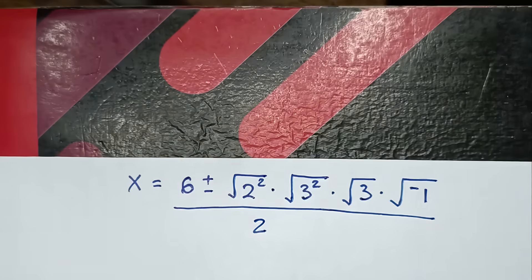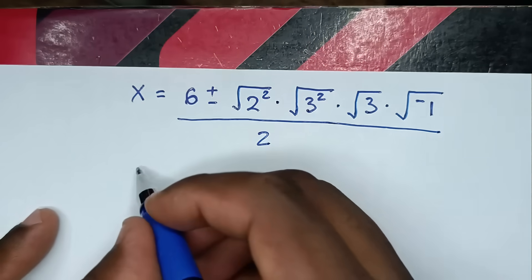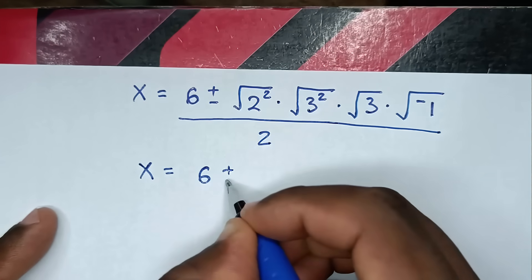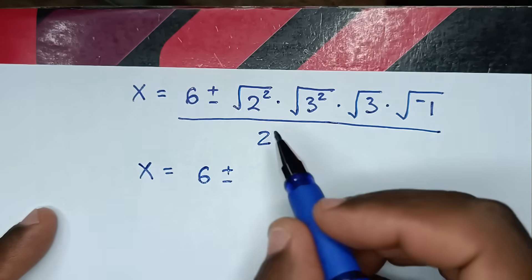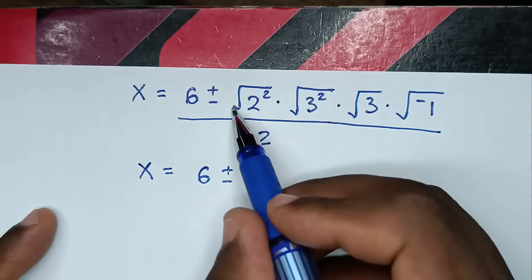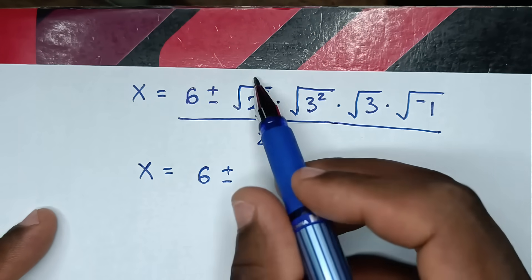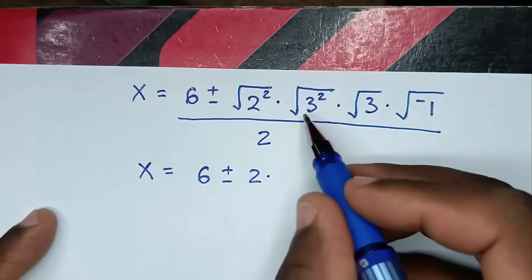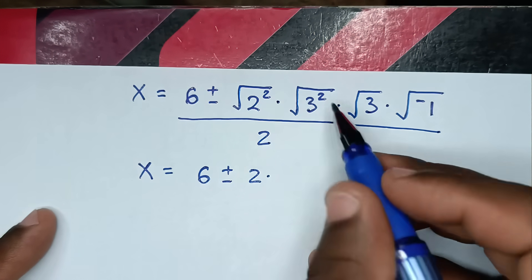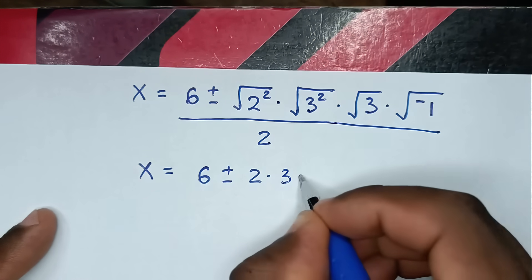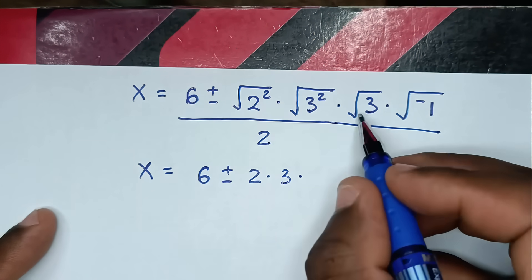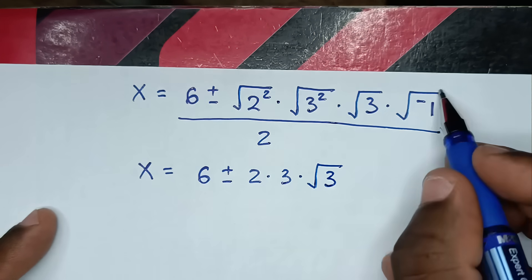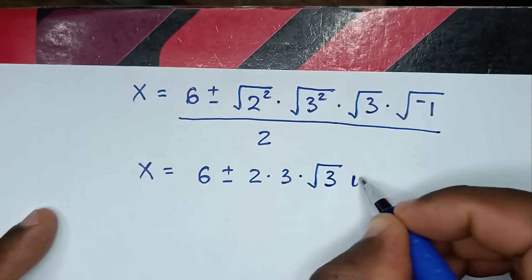So x is equal to 6 plus or minus: square root of 2 squared is 2, times square root of 3 squared is 3, times square root of 3.